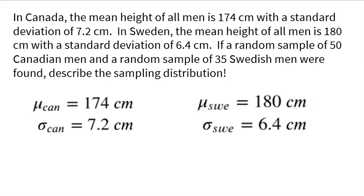Before I get started on any of these problems, I like to get all my numbers organized, because there's a lot of numbers in this problem. I'm going to use CAN as my subscript for Canadian, and SWE for Swedish men. So the mean for the Canadian was 174, standard deviation 7.2, and the sample size for the Canadian men was 50. For the Swedish men, the mean was 180, standard deviation 6.4, and the sample size for Swedish men was 35.